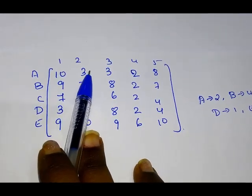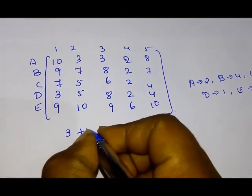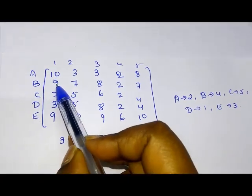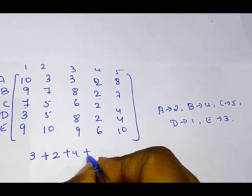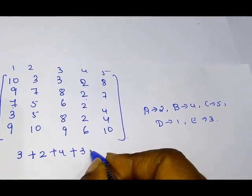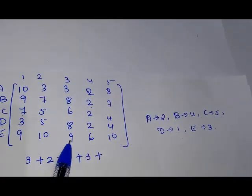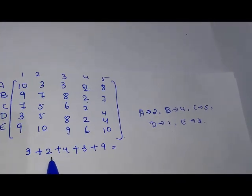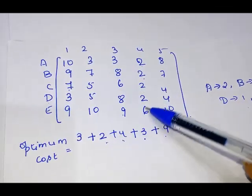Now we look up these assignments in the original initial matrix to find their costs. A→2 has cost 3. B→4 has cost 2. C→5 has cost 4. D→1 has cost 3. E→3 has cost 9. The total optimum cost is: 3 + 2 + 4 + 3 + 9 = 21. For the given initial matrix, this is the optimum assignment and the optimum cost is 21.